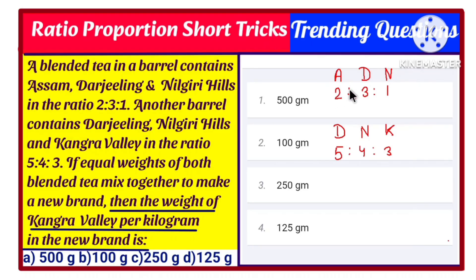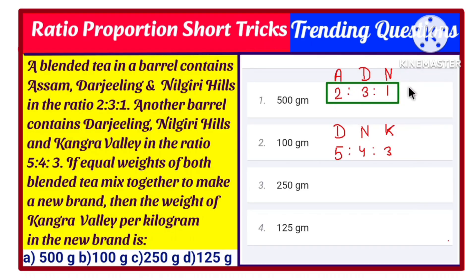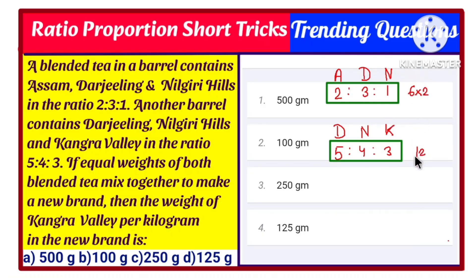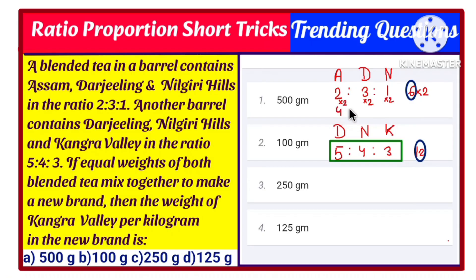Here, if we add 2+3+1 we get 6, and if we add 5+4+3 we get 12. So the first barrel has 6 units and the second has 12 units. To make the weights equal we take the LCM of 6 and 12, which is 12, and multiply the first ratio by 2. So we get: A = 2×2 = 4, D = 3×2 = 6, N = 1×2 = 2.